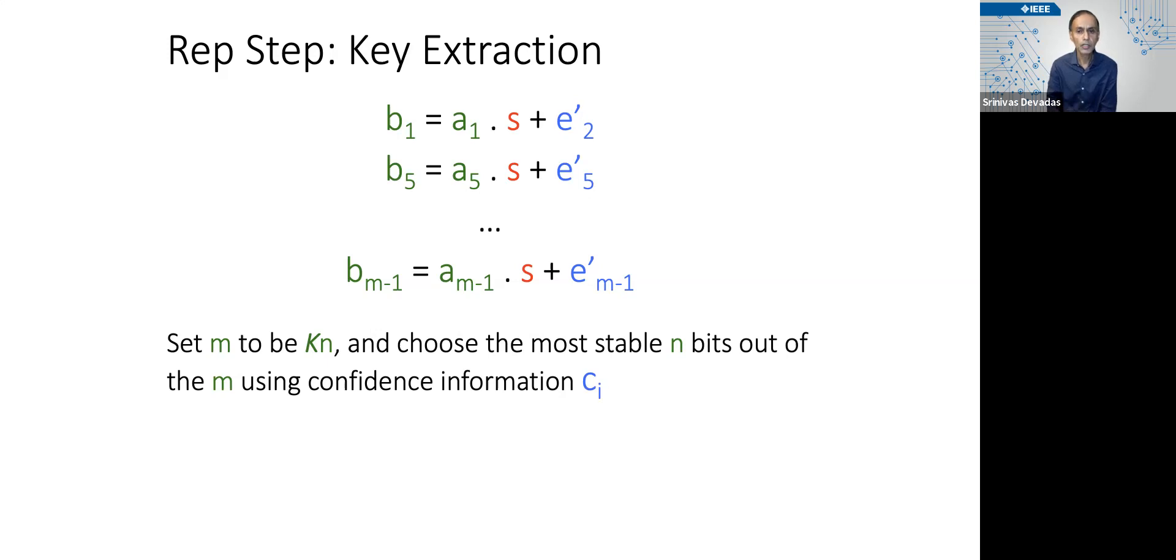So just choose the cᵢ values, N of these that are the largest. Pick the equations. Perhaps they're b₁, b₅, et cetera, and bₘ₋₁. There's N of these equations. We know the b's. We know the a's.